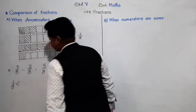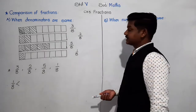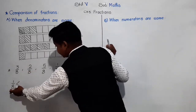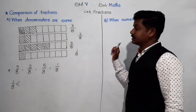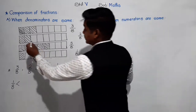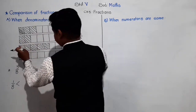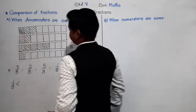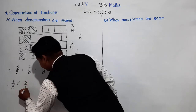Then secondly, which is greater than 1/8 but smaller than the remaining ones? That is 2/8. See the shaded portions: in the first chocolate this much is shaded, in the second this much, in the third this much, and in the fourth this much. So 2/8 will come afterwards.